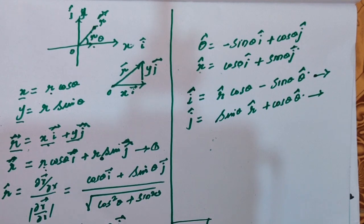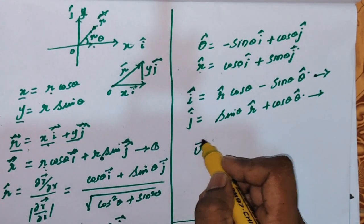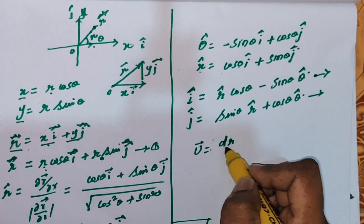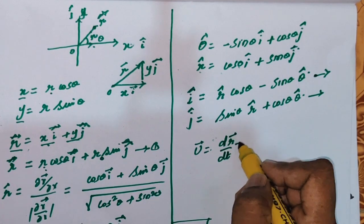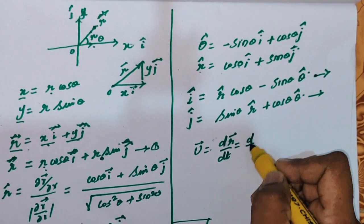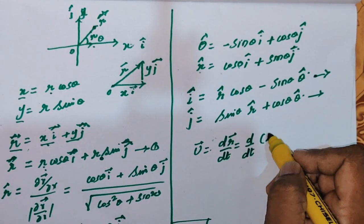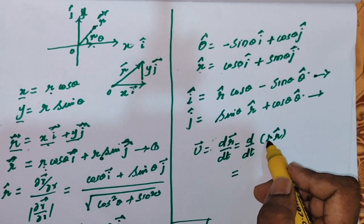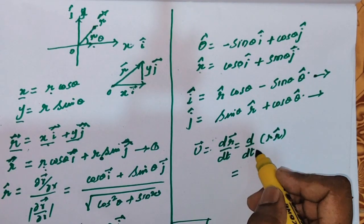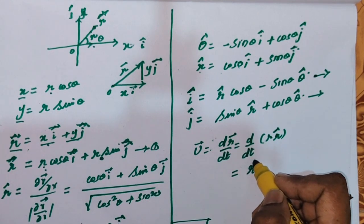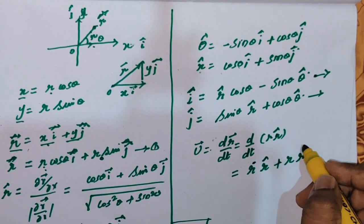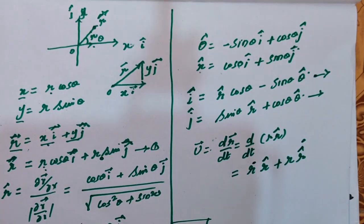Now our main goal is to find the velocity. Velocity is the rate of change of displacement vector, that is dr/dt. We can write the r vector as r*r̂. Differentiating this product using differentiation by parts: d/dt(r*r̂) = ṙ*r̂ + r*(dr̂/dt).